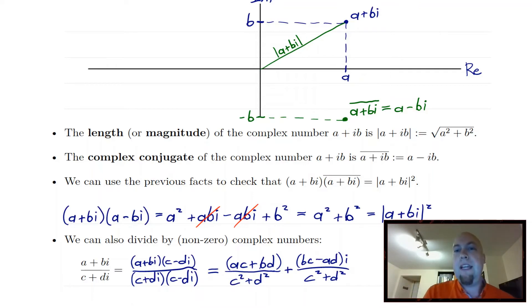And so, if your complex number happens to be real, then this length or magnitude really is just the absolute value. But it also works for complex numbers not on the real axis.